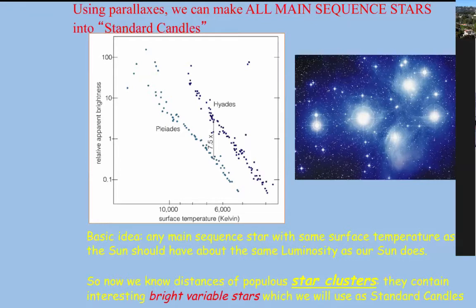The beauty of main sequence stars is that they're all basically the same — same physics, same equation of state, same equations of energy generation. The relation between surface temperature, which you observe quite easily, and intrinsic luminosity, maybe compared to the sun, is fixed. Every main sequence star: as long as you know the surface temperature — just tell me the color of the star — it's a standard candle. The whole main sequence is like a bunch of standard candles.